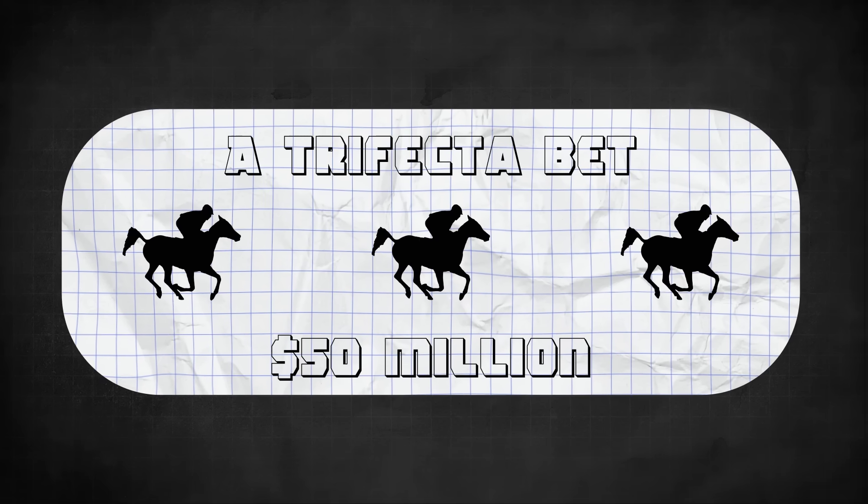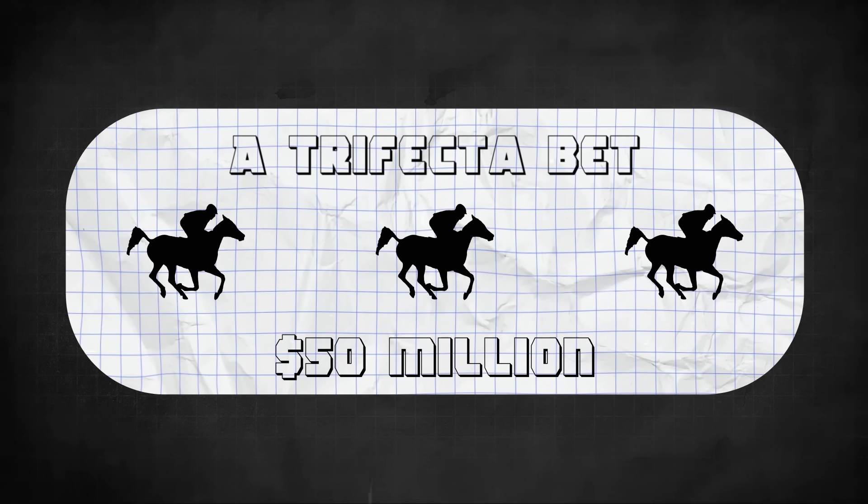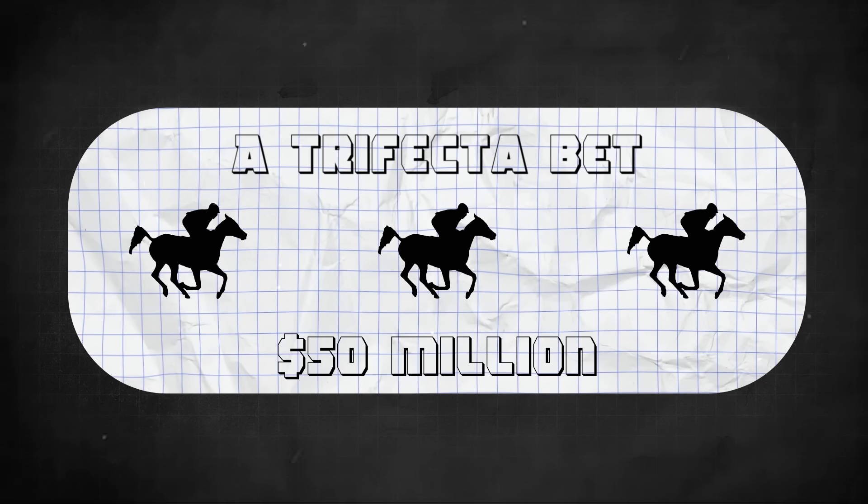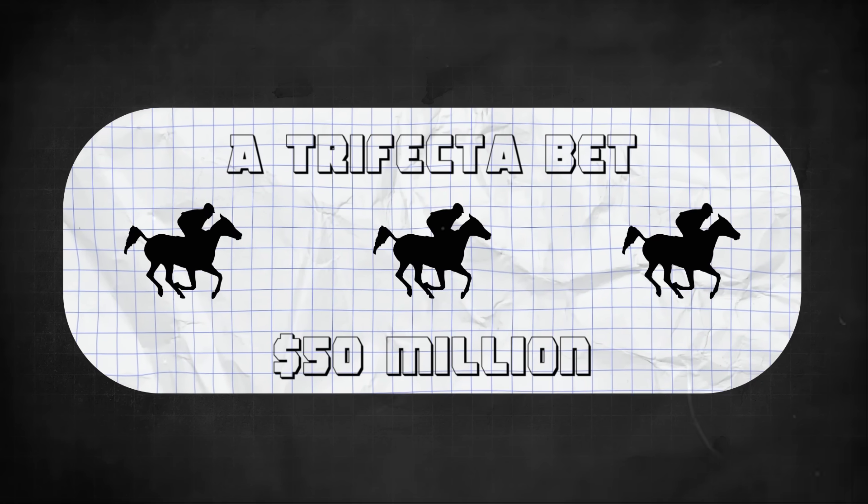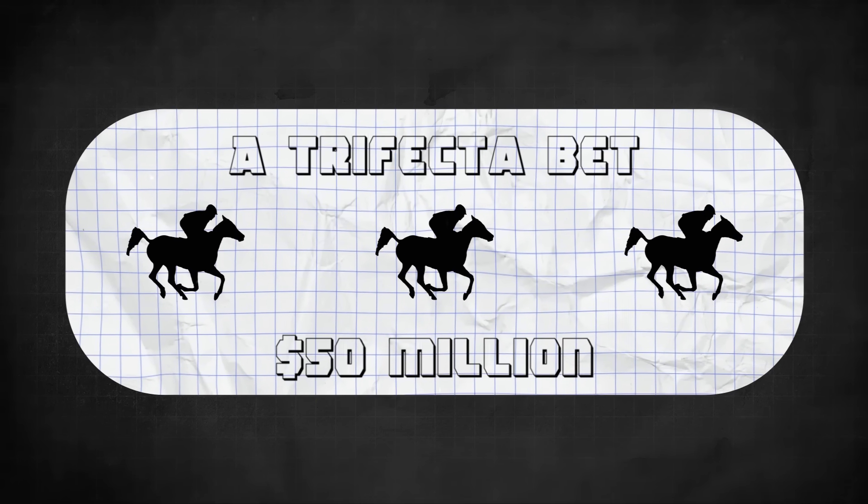On one race day in November 2001, the model triggered a rare signal. A trifecta sequence with unusually high confidence. Three horses, not favorites, were showing strong edge across multiple indicators. Their order, according to the model, wasn't just possible. It was profitable. The system placed the bet. And when the race ended, it hit.